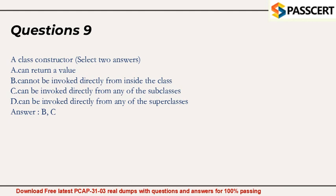Question 9. A class constructor, select two answers: A. can return a value. B. cannot be invoked directly from inside the class. C. can be invoked directly from any of the subclasses. D. can be invoked directly from any of the superclasses. Answer: B, C.